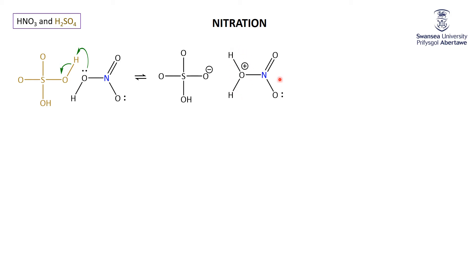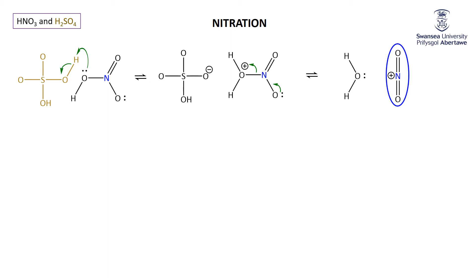In this conjugate acid of nitric acid we have an interesting situation: we've effectively got a water molecule bonded to an NO2 species. Water is an exceedingly good leaving group — we'll cover that more when we get into alcohols. So the NO2 can say goodbye to the water: the oxygen takes the two electrons from the bond, water leaves, and the nitrogen gets two electrons from its oxygen. We end up with water and the extremely important nitronium cation, NO2+.